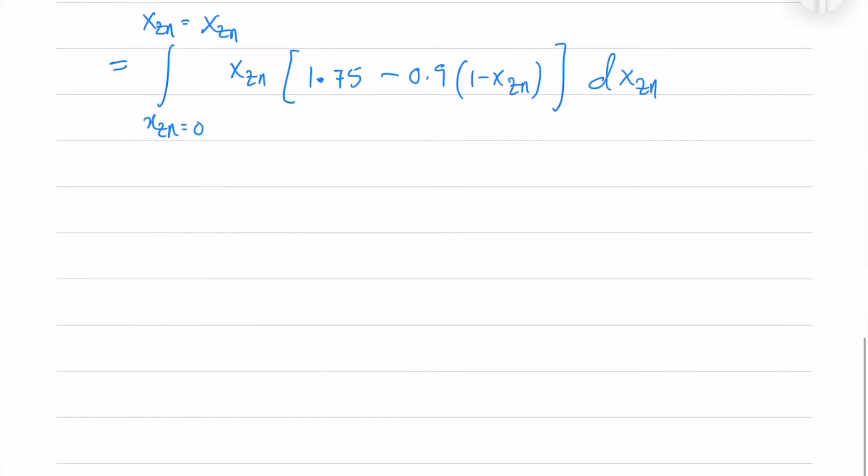We will cancel xcd. Now, we are left with the xzn. We will write xcd in terms of 1 minus xzn and integrate the xzn here.